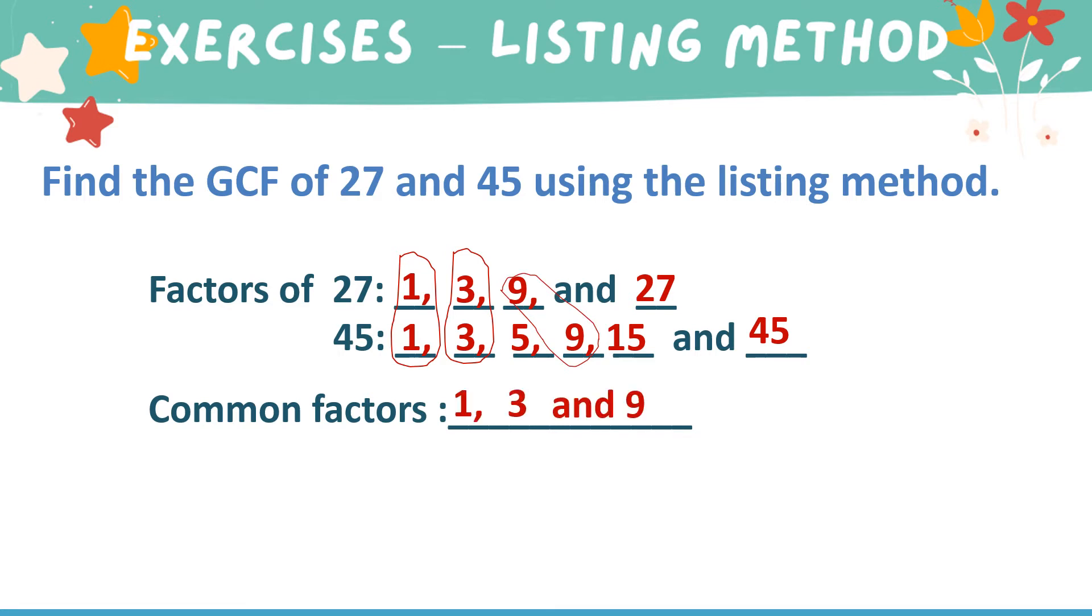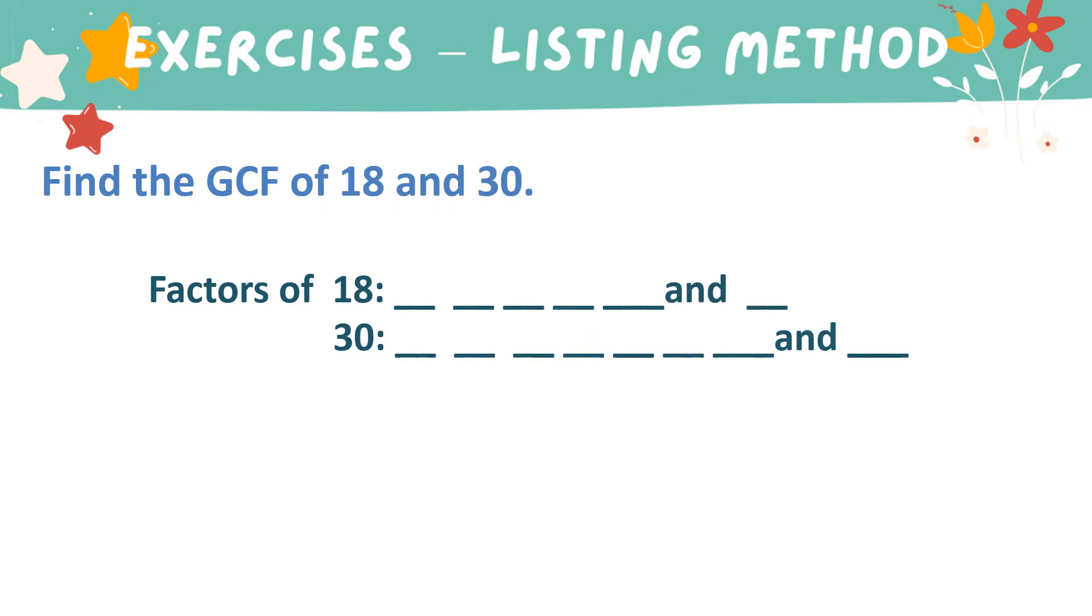Among the three common factors, the GCF is 9. Last example, find the GCF of 18 and 30.